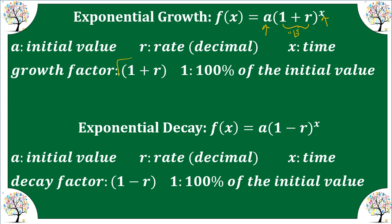The growth factor is 1 plus the rate. The 1 from our growth factor just stands for 100% of your initial value, so we have 100% of the initial value plus the rate at which it's going to increase. Our exponential decay is similar: a is still our initial value, and the b value is 1 minus the rate at which things decay. X is still time. The decay factor is 1 minus your rate — it's the b value.